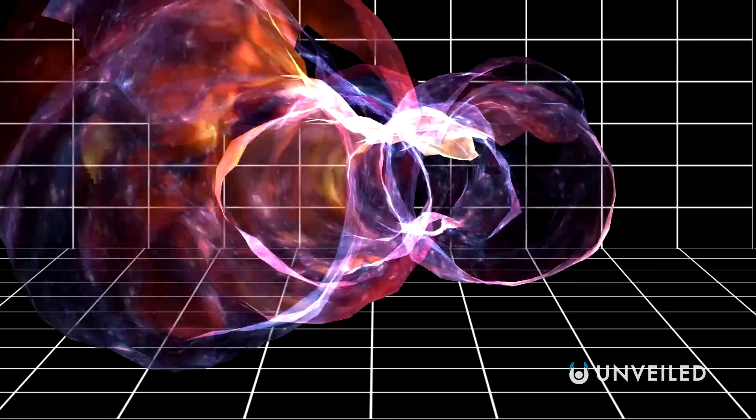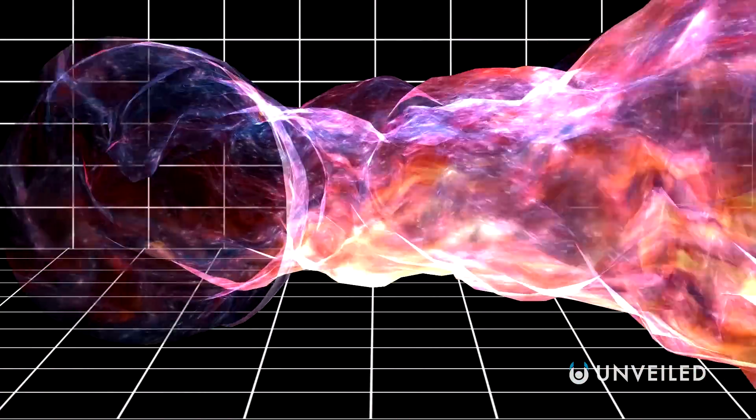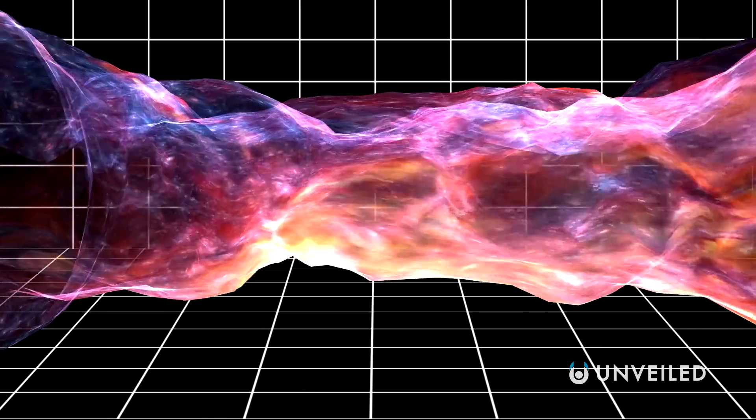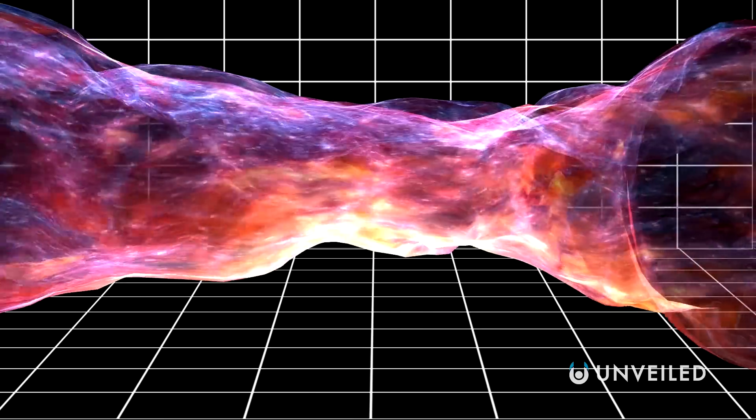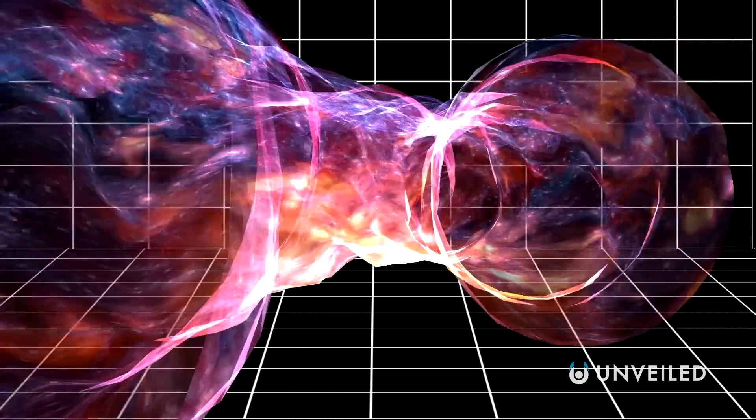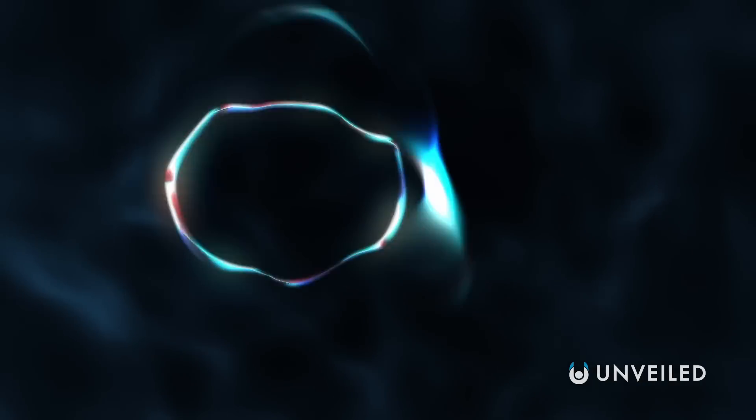For example, one commonly held idea on the shape of the universe states that it should be flat and infinite, which would lead to a variation of the many-worlds interpretation, as it implies an overriding structure in which every possible atomic arrangement could eventually exist many times over.